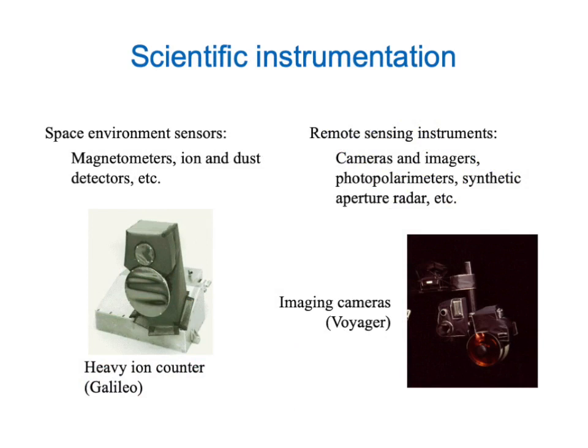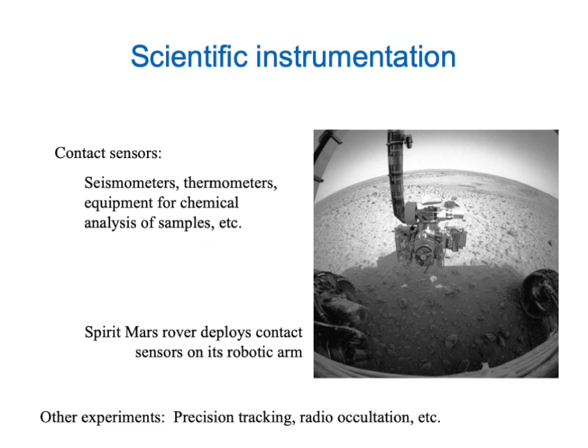We'll also need to consider what scientific instrumentation needs to be carried by our spacecraft. We can have space environment sensors that measure magnetic fields, ion concentrations, dust particles, and so on. We can also have remote sensing instruments, including cameras and other imagers, and radar systems — and they're often the most informative of the sensors. And if we have a landing spacecraft, we can also have what we might call contact sensors — sensors that require you to come into physical contact with what you're studying. Seismometers, thermometers, equipment for measuring the chemical composition of soil, and so on. There are other types as well, like using the communication system to track the spacecraft very precisely and measure a planet's mass.